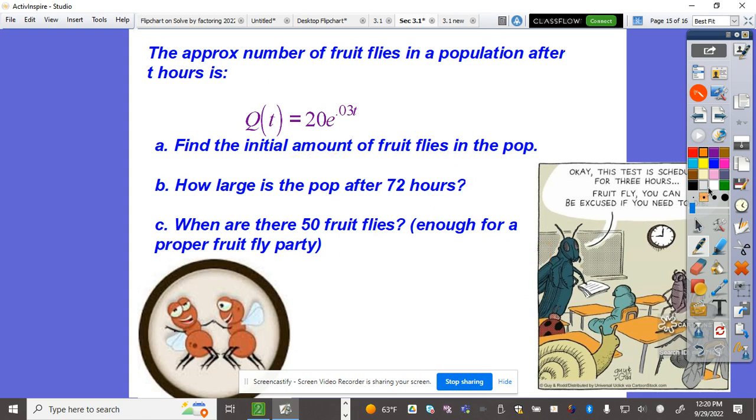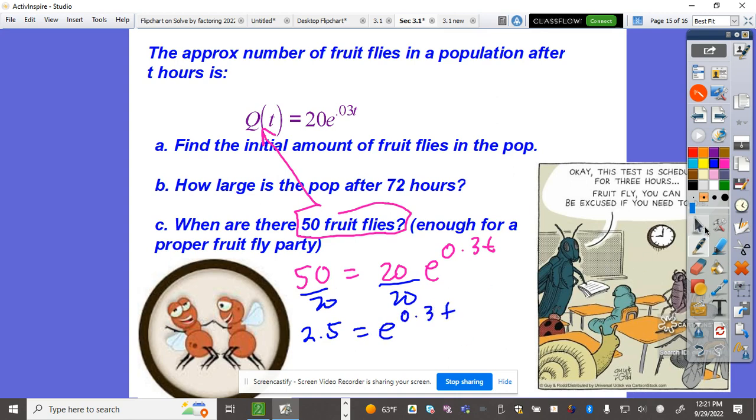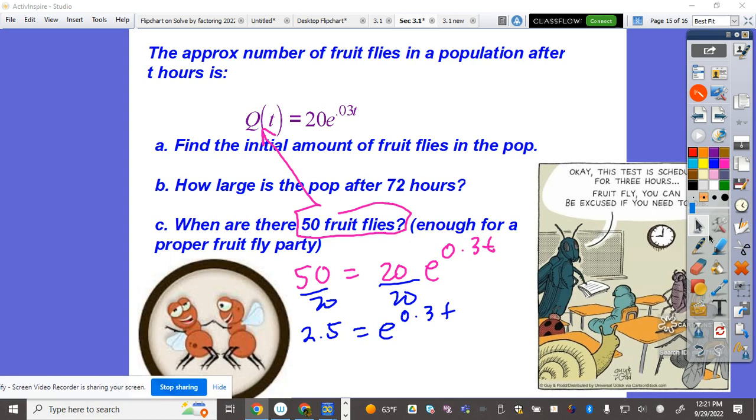When are there 50 fruit flies? Plug in 50: 50 = 20e^(0.3T). Divide by 20 to get 2.5 = e^(0.3T). Using logarithmic function, multiply both sides by ln: ln(2.5) = 0.3T. Divide by 0.3. ln(2.5) divided by 0.3 equals 3.05 hours.